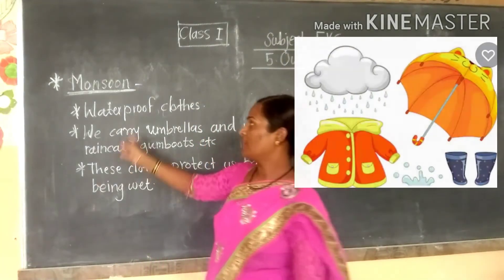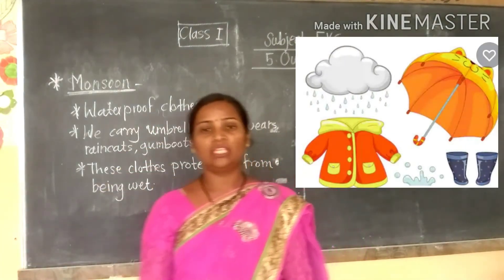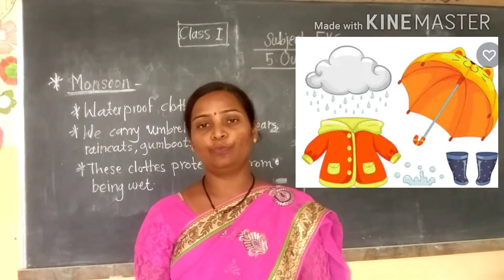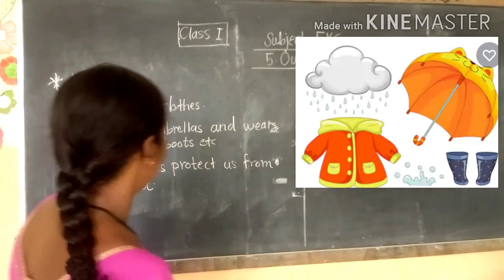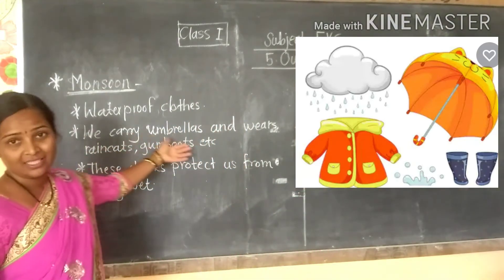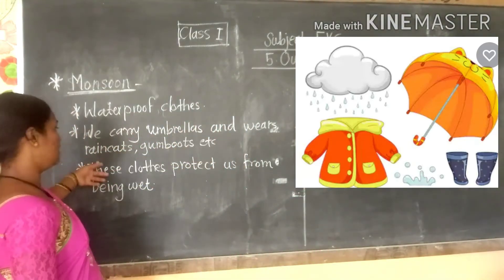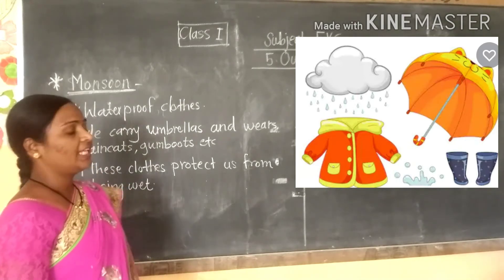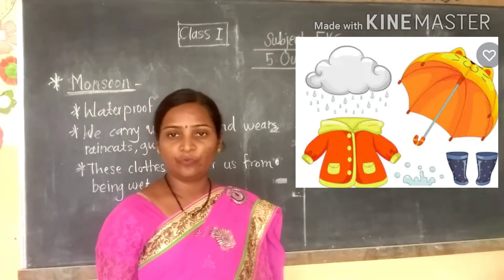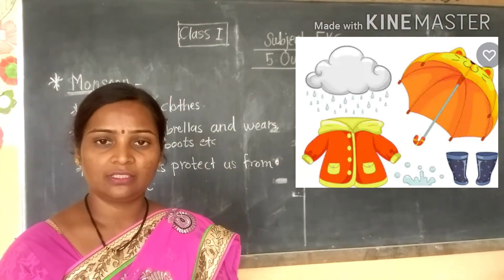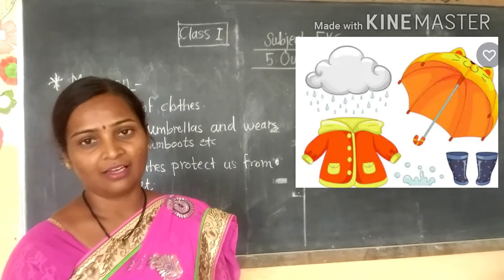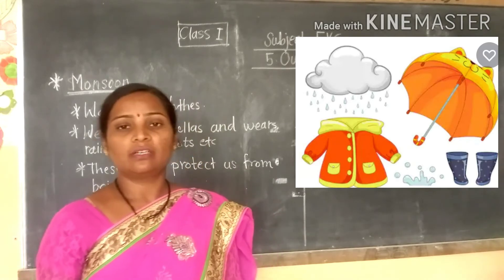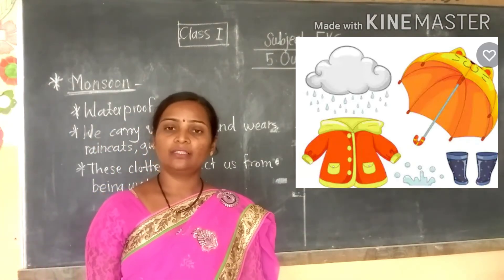The next season is monsoon. In monsoon, there is a lot of rain and we wear waterproof clothes. We carry umbrellas and also wear raincoats and gumboots. These clothes protect us from the rain. These are the clothes we wear in summer, winter, and monsoon.